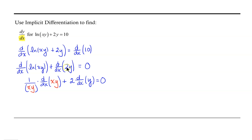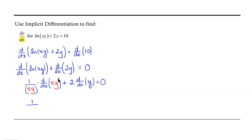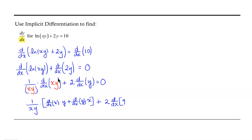Continuing on, we have 1 over xy, and we need to take the derivative of x times y, so we'll need the product rule. That's going to be the derivative of the first function x, times y, plus the derivative of the second function y, times x, plus 2 times the derivative with respect to x of y, equals 0.